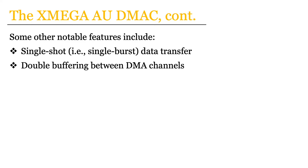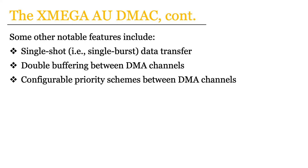Finally, another feature to note is that when utilizing more than one DMA channel — and again we only have four — there generally needs to be some priority scheme to determine which channel is to perform data transfer if multiple channels are to perform data transfer at one given moment in time. So the DMA-C specifically allows the possibility for configuration of these DMA channels with regard to priority.